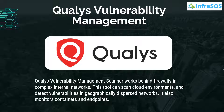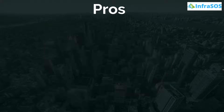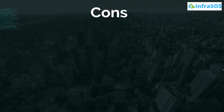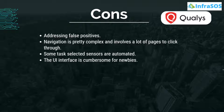The Qualys vulnerability management scanner works behind firewalls in complex internal networks. This tool can scan cloud environments and detect vulnerabilities in geographically dispersed networks. It also monitors containers and endpoints. Pros include a unified dashboard for security posture, ease of configuration and control management, and reporting and alerting mechanisms. Cons include that it can show many false positives, the navigation is complex and involves many pages to click through, and some task-selected sensors are automated.